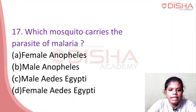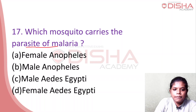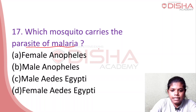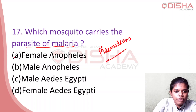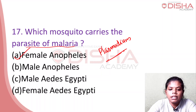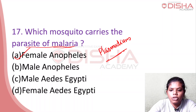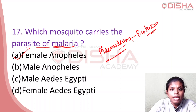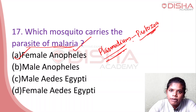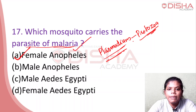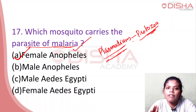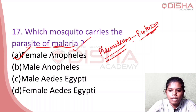Which mosquito carries the parasite of malaria? The malaria parasite is called Plasmodium. Plasmodium is a protozoa carried by the female Anopheles mosquito. Malaria is transmitted by the female Anopheles mosquito.